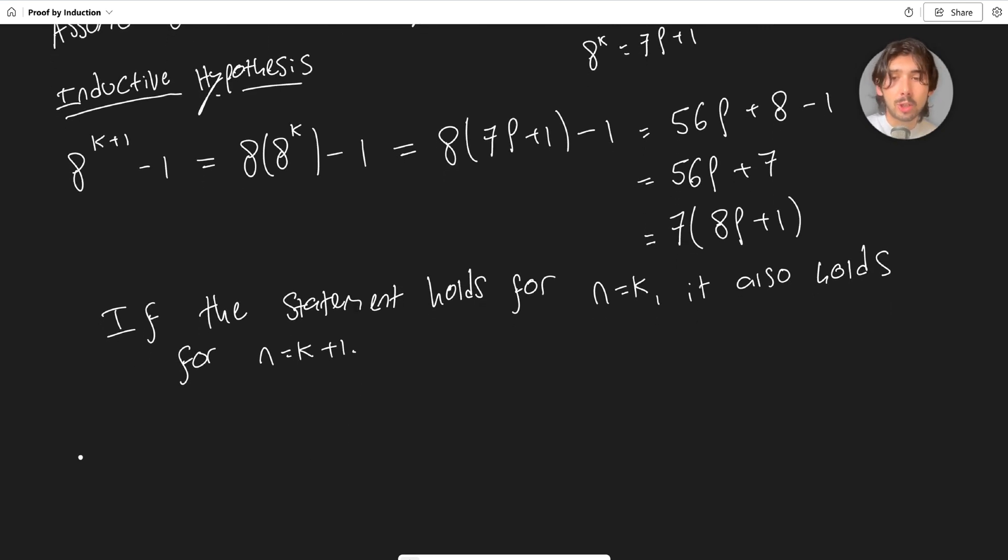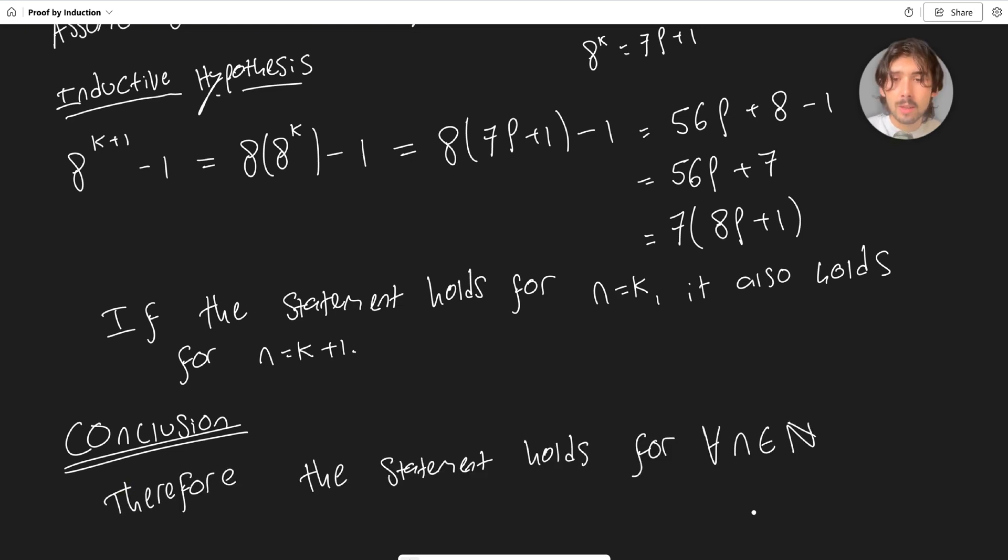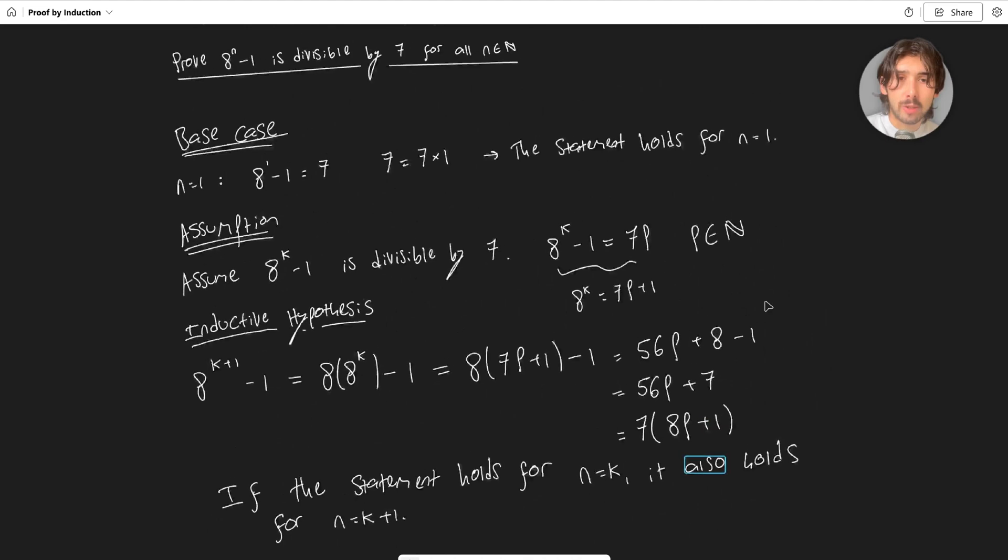The final step is the conclusion. There's four steps, this is the fourth one. The conclusion is always the same with every single question proved by induction, more or less. It simply says therefore the statement holds for all n in the natural numbers. That's the logic of induction.